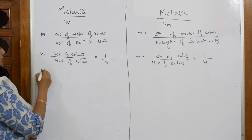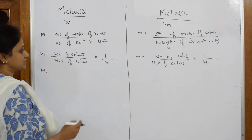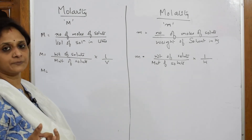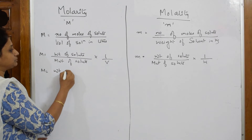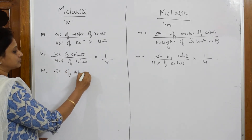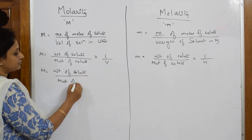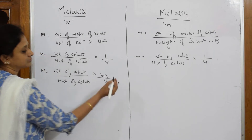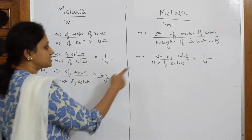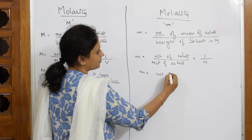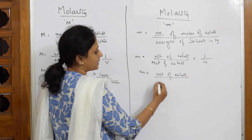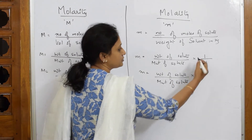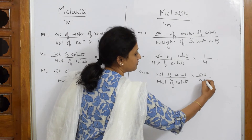Now if we standardize to 1000 — that is 1 litre — for molarity we write: weight of solute divided by molecular weight of solute, multiplied by 1000 over V in liters. Similarly for molality: weight of solute divided by molecular weight of solute, multiplied by 1000 over weight of solvent in grams.